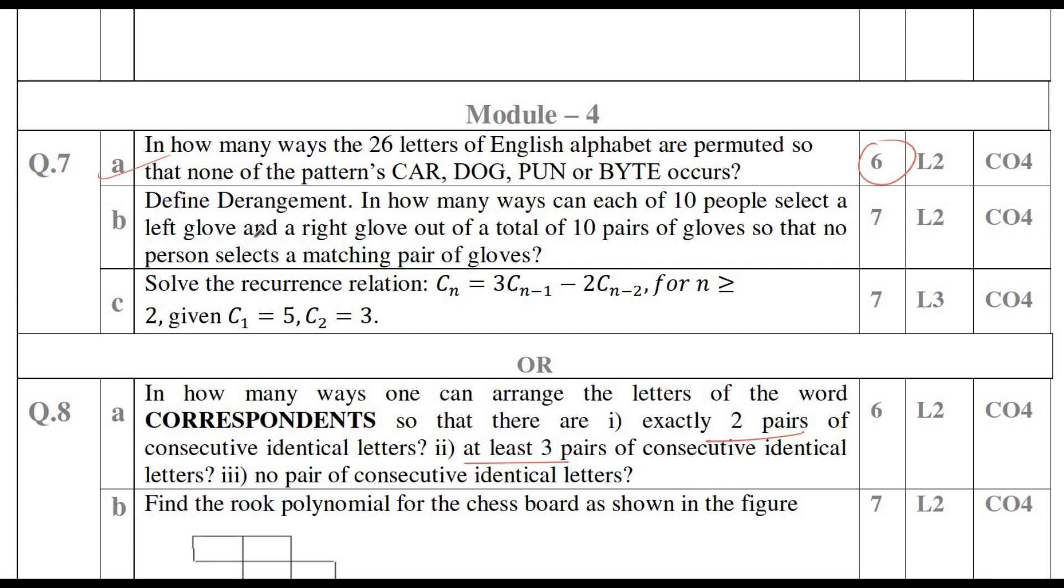Apart from principles of inclusion, I prefer you to go through derangement problems since it is very easy to solve. Knowing the definition and solving the problem is very simple; within five minutes you can solve the problem. I prefer seven marks here. If you are not comfortable with derangements, go with root polynomials. And if you are aware of solving differential equation problems, you can study recurrence relations. There also you can score seven marks. In this module, I feel you can score 20 out of 20 marks, but if not comfortable, you can score minimum 13 marks.